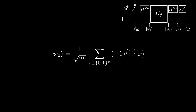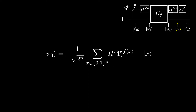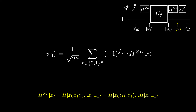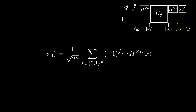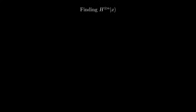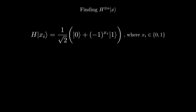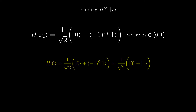At ψ₃, we apply a Hadamard to each of the qubits — meaning for every bit in the bit string x, we apply a Hadamard gate. We cannot use the previous formula since that one only applies when the state is all zeros; x can be any combination of 0s and 1s. We can rewrite the Hadamard transform on an arbitrary bit xᵢ as (1/√2)(|0⟩ + (-1)^xᵢ|1⟩), since if xᵢ is 0 it becomes the plus state, and if xᵢ is 1 it becomes the minus state.